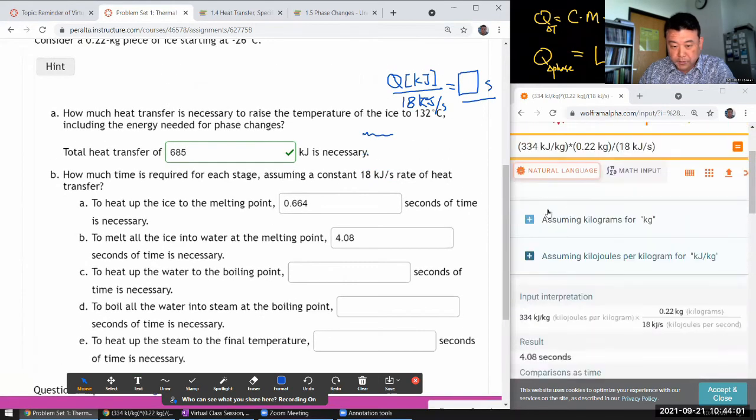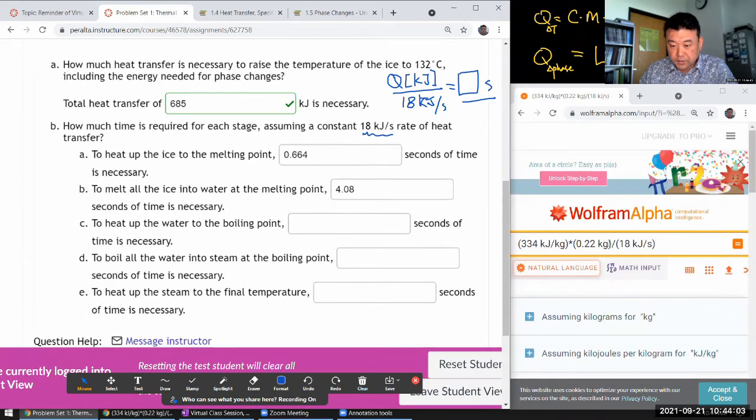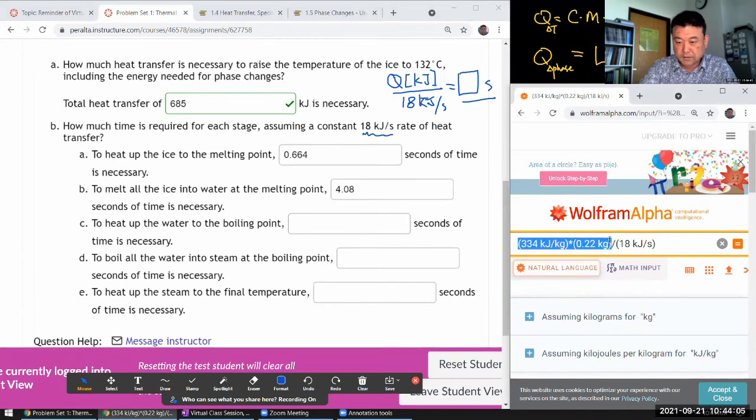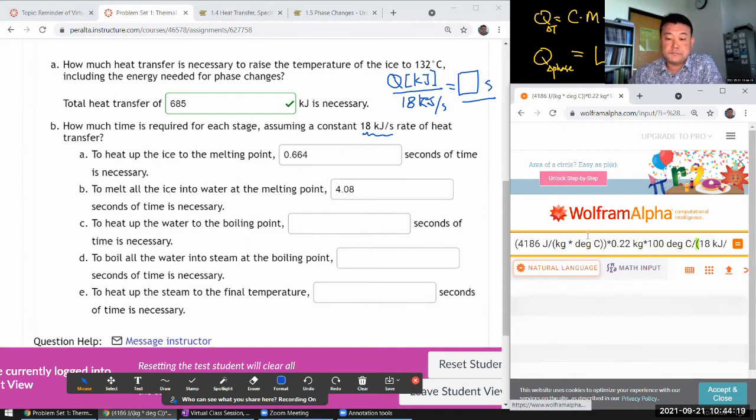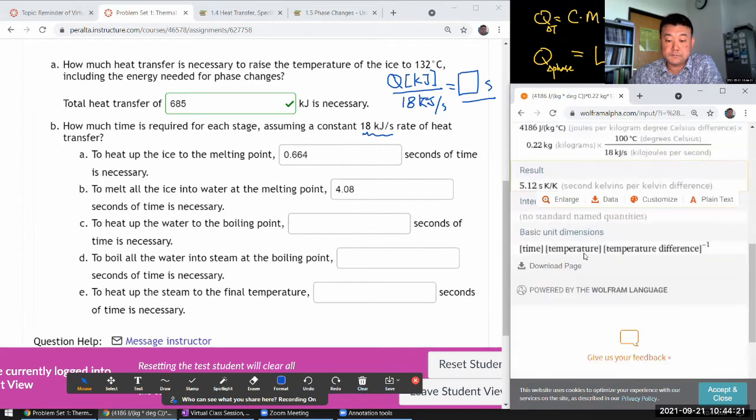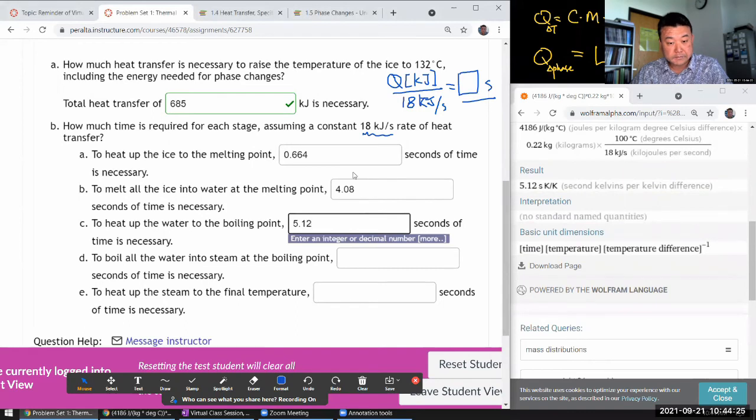Heat up the water to the boiling point - that's my third part. Let me just paste in the whole thing and see which part. Yeah, 100 degrees - this is the water heating up. 5.12 seconds. Okay, decent, comparable.